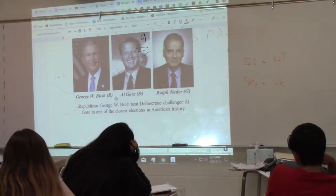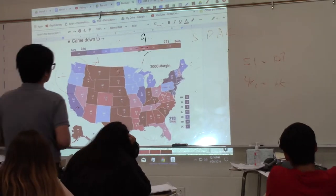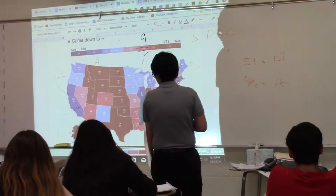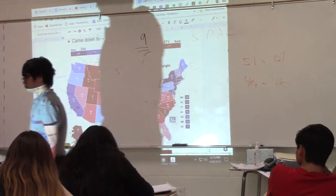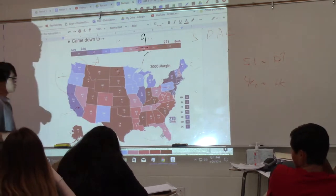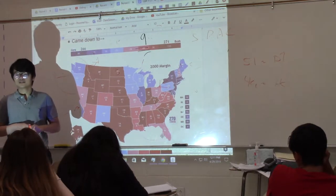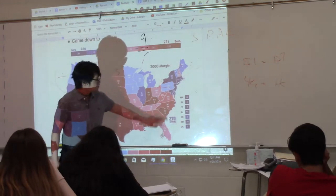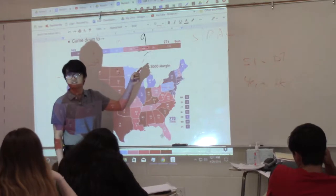As the election went down, it was a very close affair and it all came down to one state — Florida — with its 25 electoral votes. Whoever won Florida would get enough votes to surpass the 270 threshold and become the next president. Without Florida, Bush would have never gotten the 271 he needed.